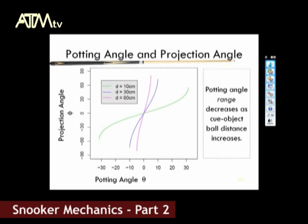Also shown by the graph — which is intuitive when we think about it — for small distances there is a greater range of possible potting angles, and as the distance increases, our potting angle range decreases while the projection angle range increases.